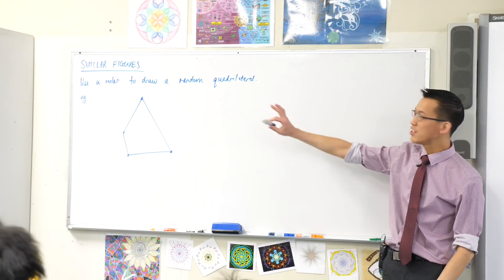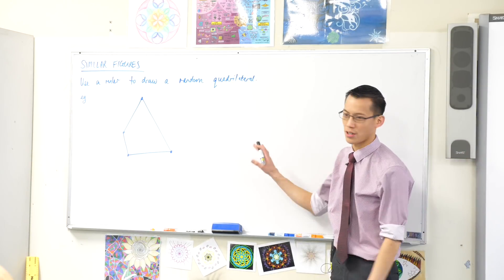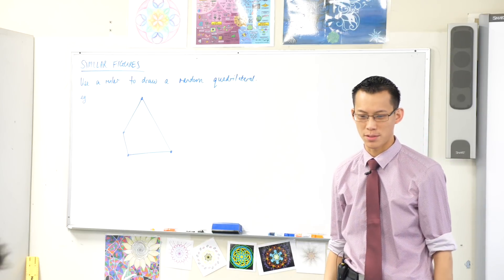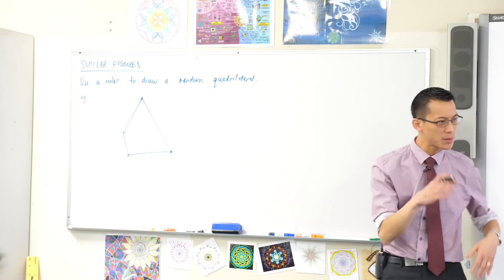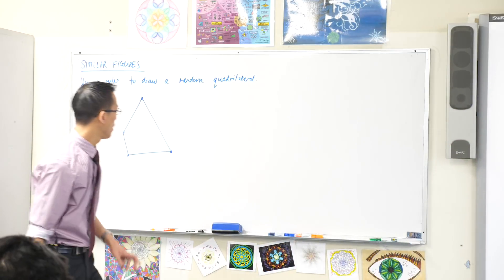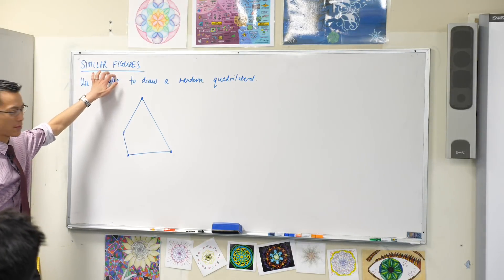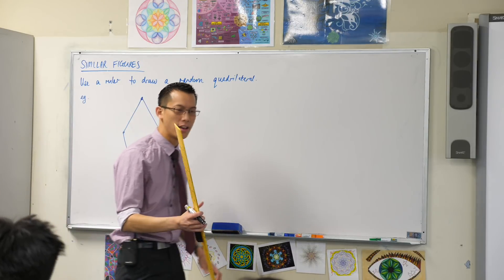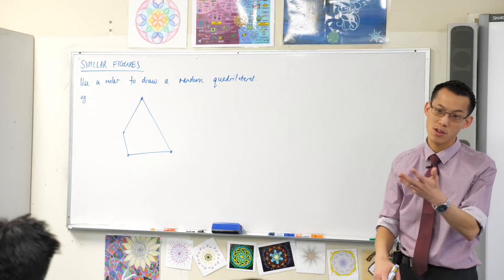What I want you to do is beside your random quadrilateral, you will need some extra space. You're going to need some space beside your quadrilateral because we're going to create one that is similar in a very particular way. Maybe you can work it out as we do it.